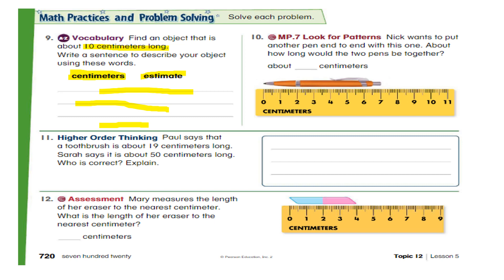Question 10. Nick wants to put another pen end to end with this pen. About how long would the two pens be together? So there is one pen on the ruler. And how long is it? Quickly tell me what is the length of this pen in centimeters? Excellent. It is seven. Very good. Now, he wants to put another pen end to end.